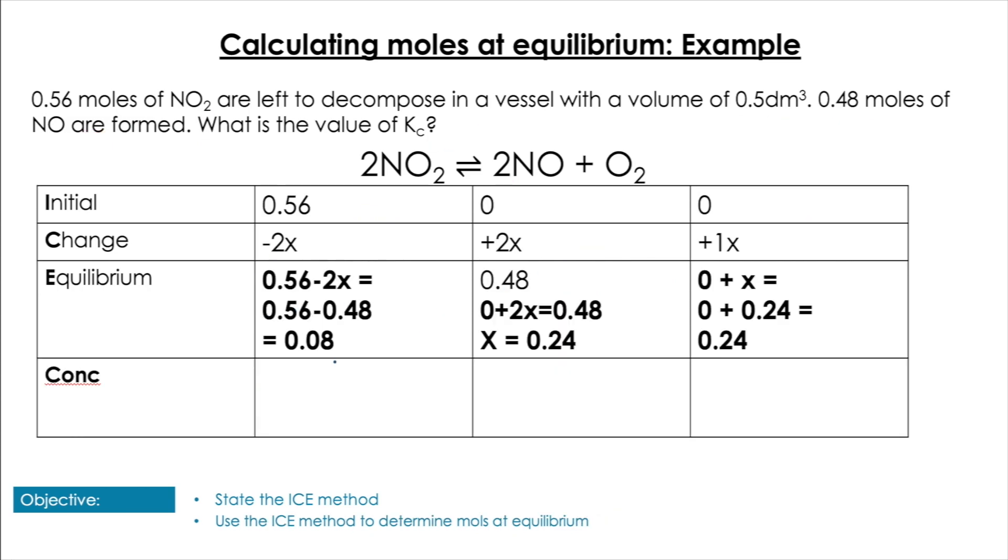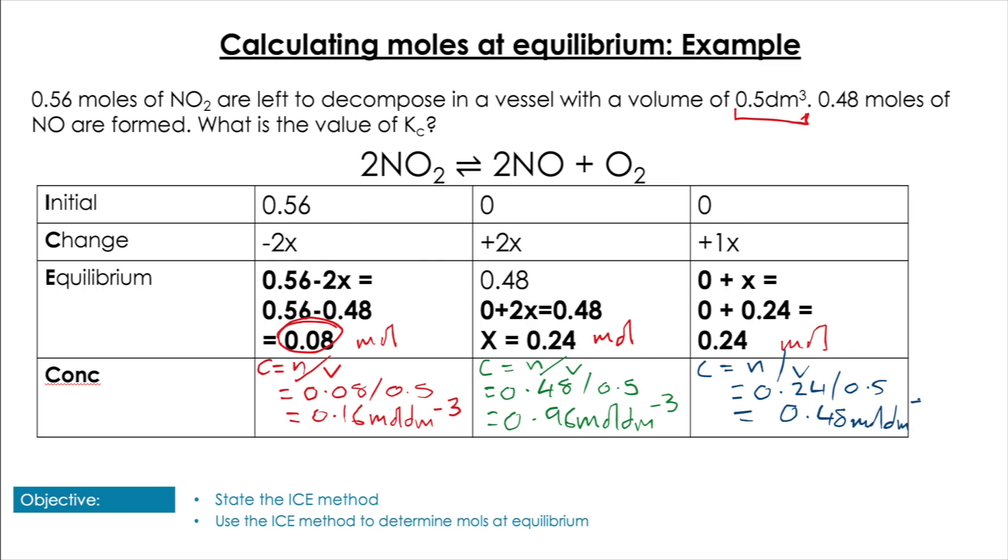Now we need to find the concentrations. We do moles divided by volume. For NO₂: 0.08 ÷ 0.5 = 0.16 mol/dm³. For NO: 0.48 ÷ 0.5 = 0.96 mol/dm³. For oxygen: 0.24 ÷ 0.5 = 0.48 mol/dm³.